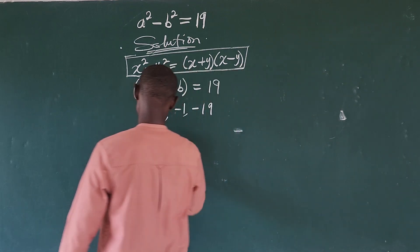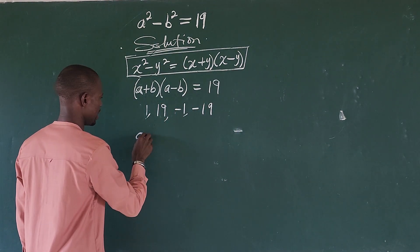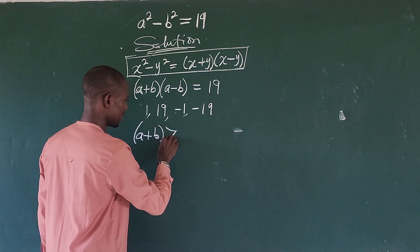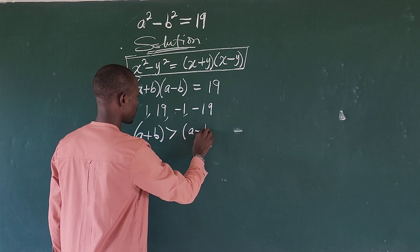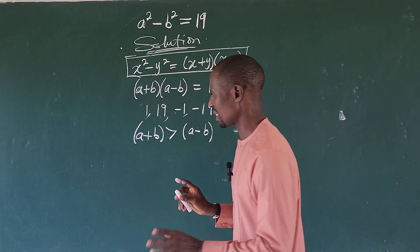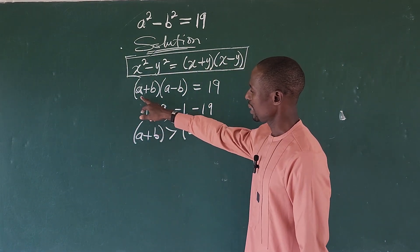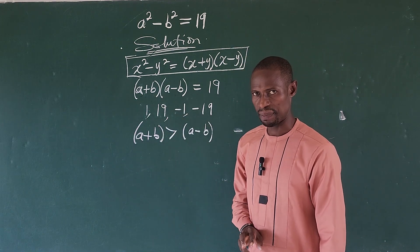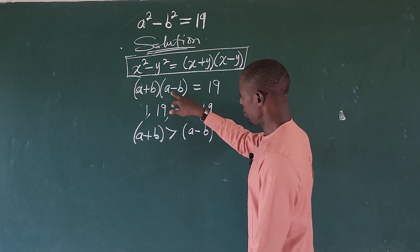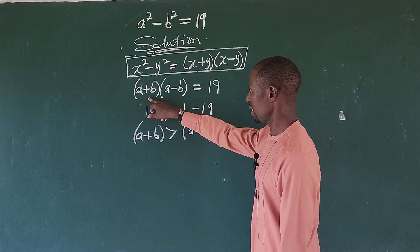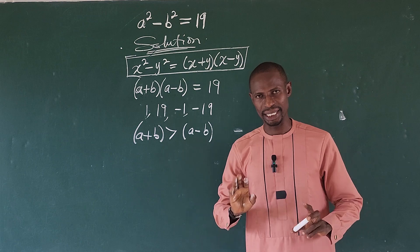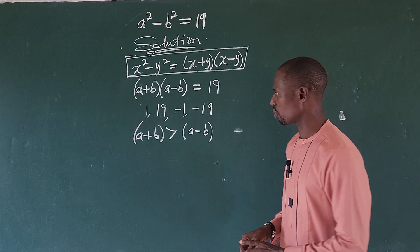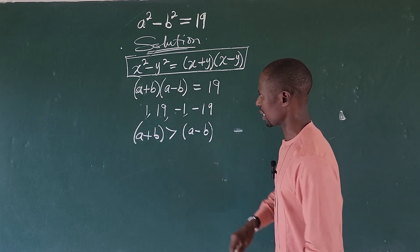This is greater than this. So let's draw up that. So we know that a+b is greater than a-b. So we cannot have a case scenario whereby this will take 1 and this will take 19. It cannot happen. Or this will take -1 and this will take -19. It cannot happen. So putting this into consideration, what are the possible case scenarios we are going to have from this system here now? It's easy.